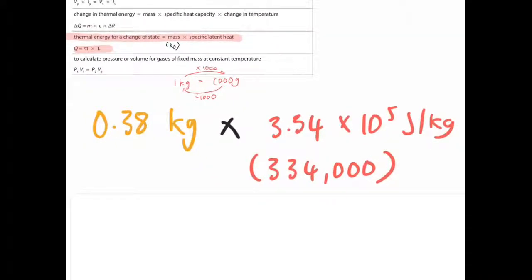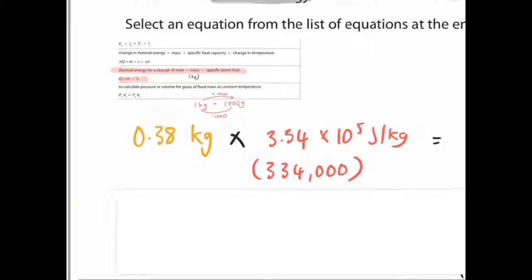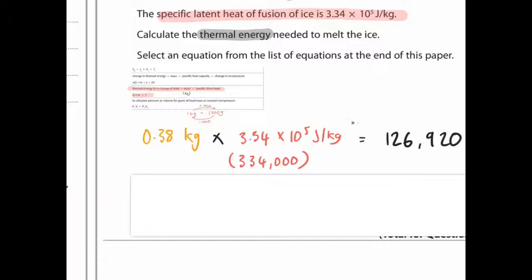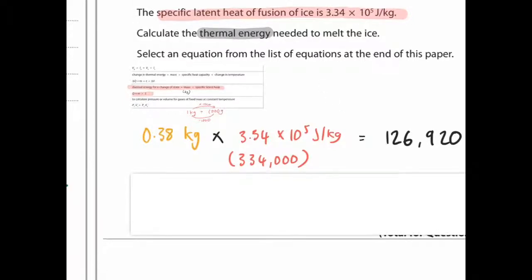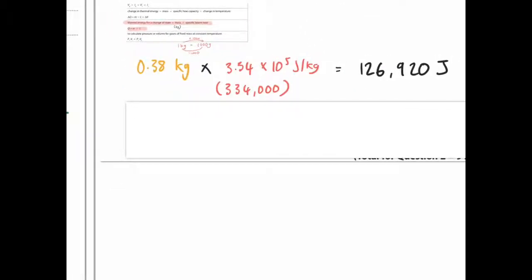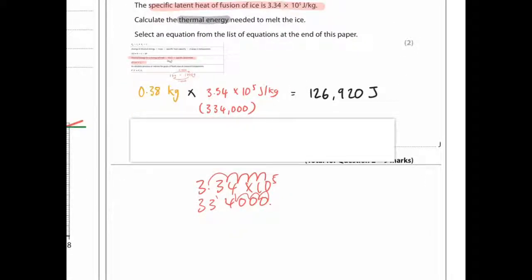So 0.38 kilograms times 3.34 times 10 to the 5, which is basically, if you're not sure how to express that, if you didn't know how to write that in a calculator, you'd basically do this. So 3.34 times 10 to the 5 is basically this decimal point moving forwards five spaces: 1, 2, 3, 4, 5. So you go 3, 3, 4, 0, 0, 0. So that's what you're doing here. So the point moves five positions: 1, 2, 3, 4, 5 positions. And that will give you 126,920 joules, and that is how much energy there is.